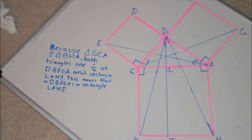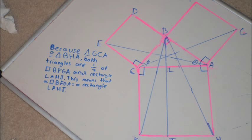You can say the same about triangle BHA and rectangle LAHJ. The base of triangle BHA is HA, and that is a side of rectangle LAHJ. The height of triangle BHA is LA, which is also another side of LAHJ. The area of triangle BHA is HA times LA times half, while the rectangle is HA times LA. This proves the area of BHA is half the area of rectangle LAHJ.